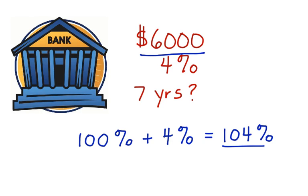we're going to turn this percentage into a decimal. We do that by dropping the percent sign and moving the decimal point two places to the left. So 1.04 is going to represent the interest rate compounded annually.